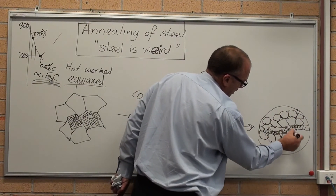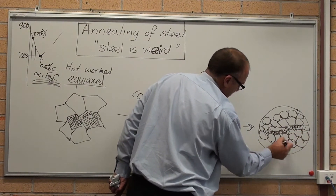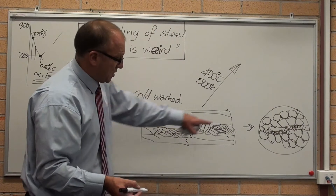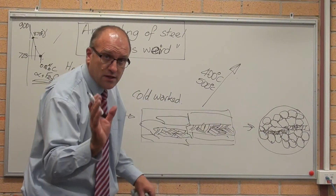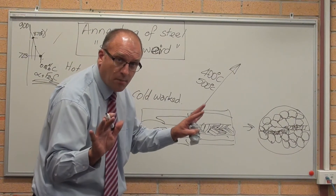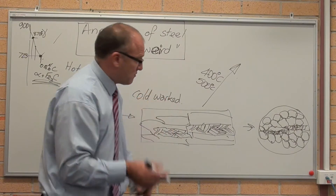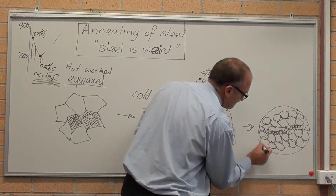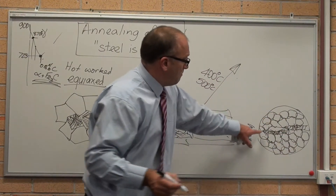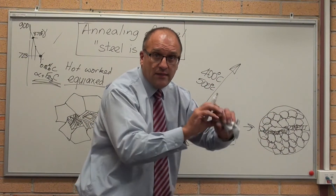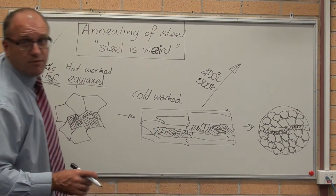A process anneal is recrystallisation and stop. Look at the difference in the grain size — a lot smaller grains. A process anneal — a recovery anneal — is recovery, recrystallise, stop. Maximum strength. But the perlite is still in those long pancakes because it hasn't gotten hot enough for the temperature to change. It hasn't gotten hot enough for the perlite to reabsorb. Steel is weird.